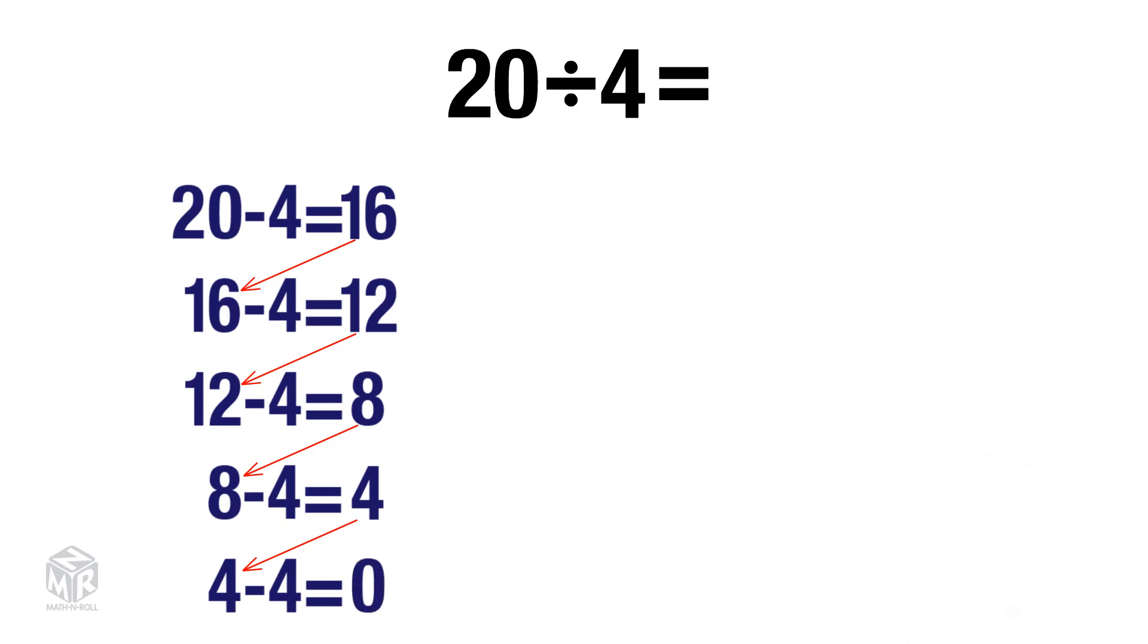Count the number of times you subtract 4: 1, 2, 3, 4, and 5. You subtract 4 five times, so 20 divided by 4 equals 5.